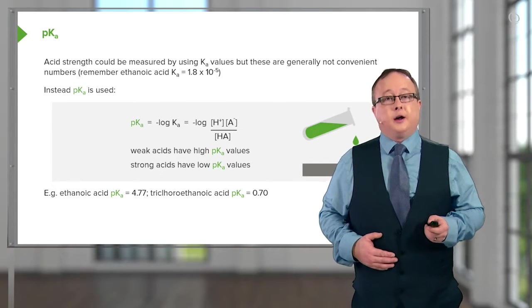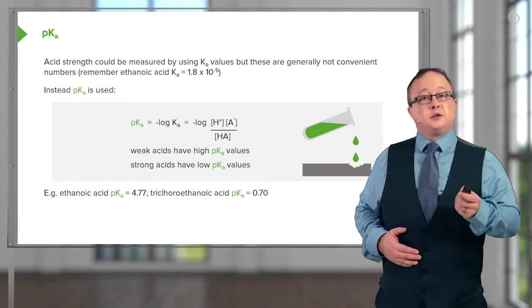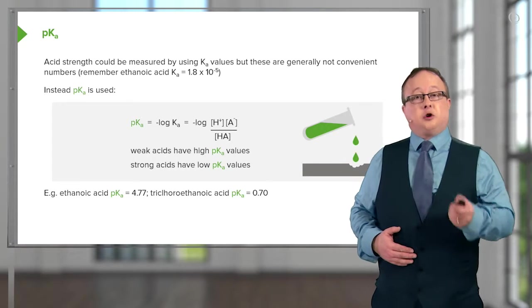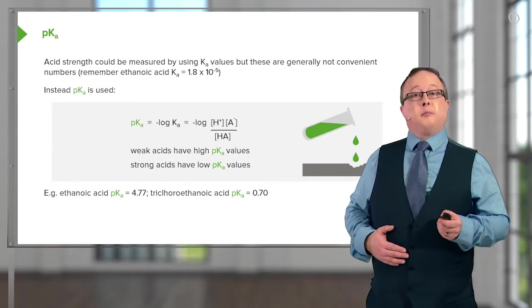For example, if we look at ethanoic acid, we see that the pKa of this calculation results in a value of 4.77. The stronger acid, trichloroethanoic acid, results in a pKa of 0.70.